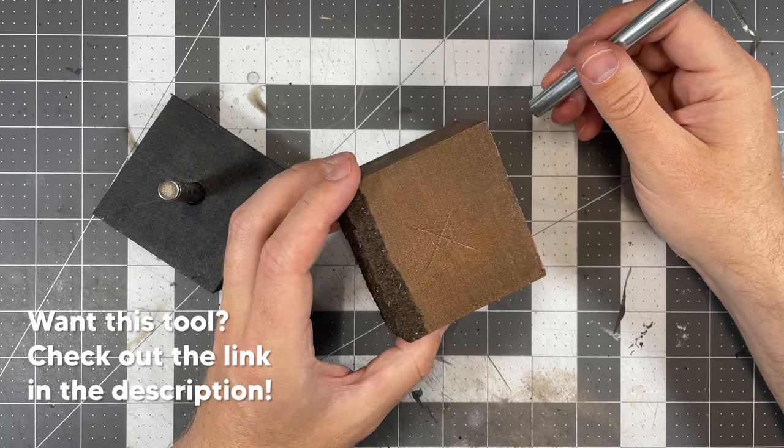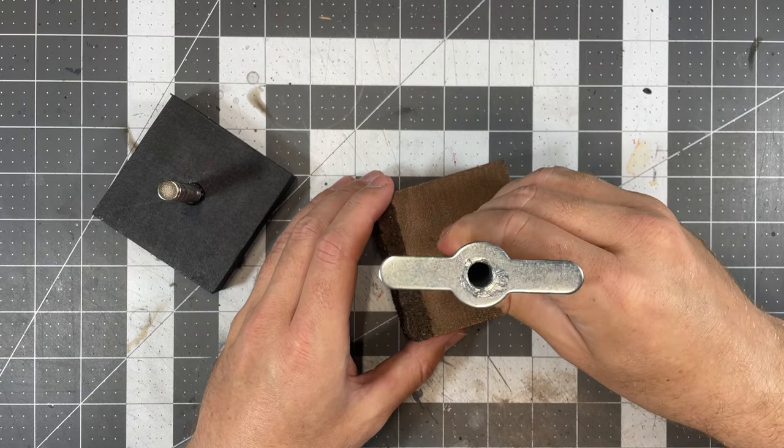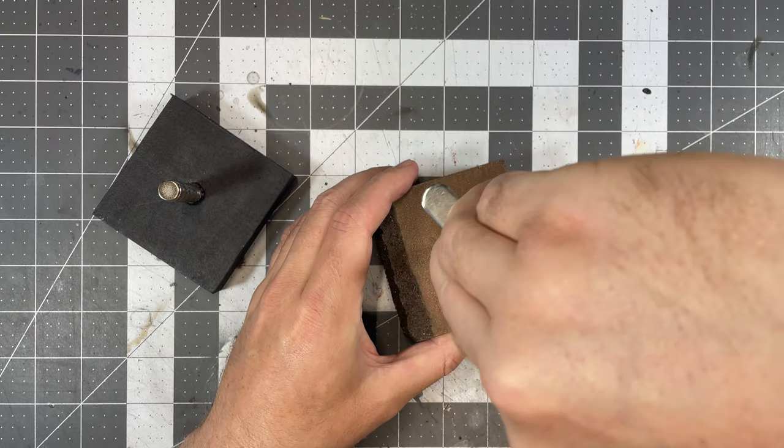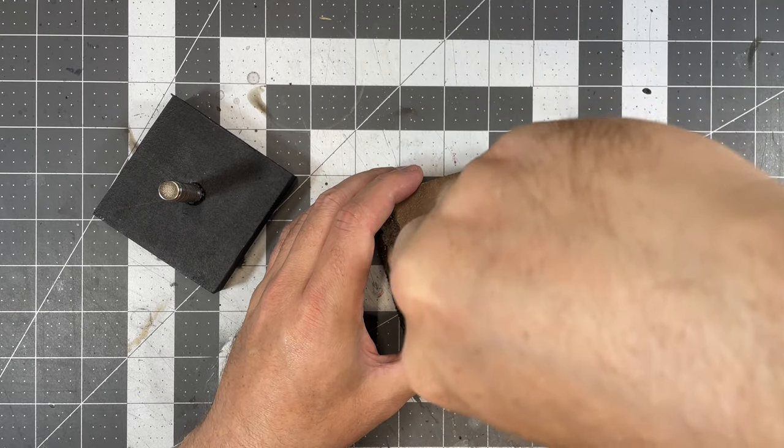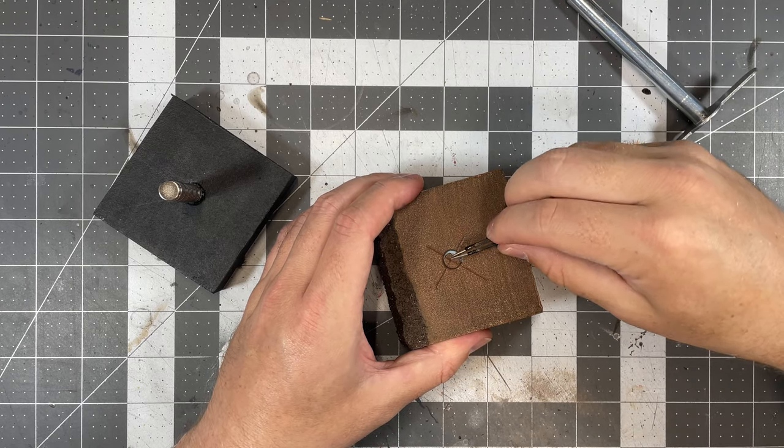These cut very easily. It might look like I'm pushing pretty hard here, but I'm really not. It doesn't take much and you don't need to go very deep, just about the thickness of the magnet, maybe a hair deeper so you can get some glue over the top of the magnet to make sure it stays in there.